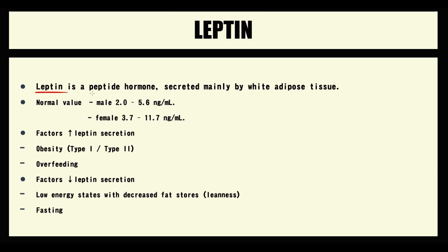Leptin is a peptide hormone, and leptin is produced mainly by white adipose tissue. The normal values of leptin are for males 2 to 5.7, and for females 3.7 to 11.7 nanograms per milliliter. To explain the clinical significance of leptin, first of all, we have to know the normal pathway of leptin in our organism.